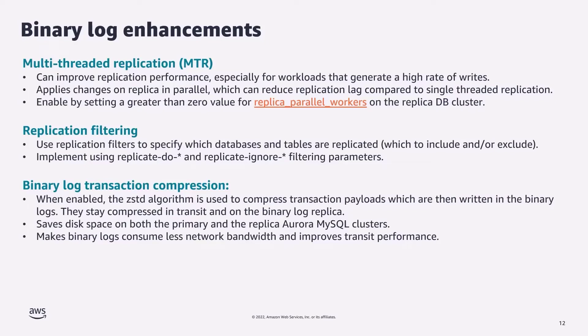Aurora MySQL 3 now also supports binary log-based replication filtering — a convenient way to selectively replicate databases by including or excluding specific databases and tables, configured via replicate_do and replicate_ignore filtering parameters in the parameter groups. Finally, you can now enable binary log transaction compression with Aurora MySQL 3. When enabled, MySQL uses the ZSTD algorithm to compress transaction payloads — compressed transactions are written to the binary log, remain compressed in transit and on the replica, saving space on both primary and replica clusters, consuming less network bandwidth, and improving replication performance especially when network bandwidth between primary and replica is limited.